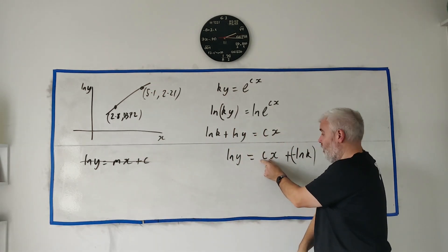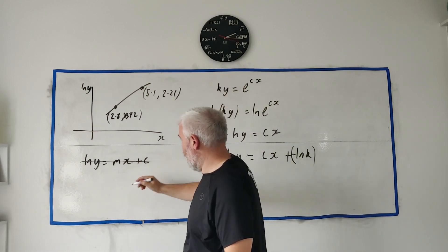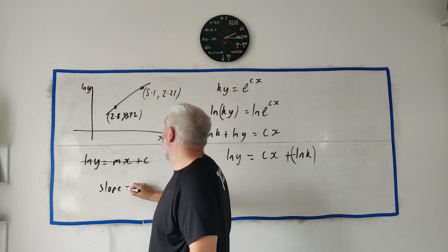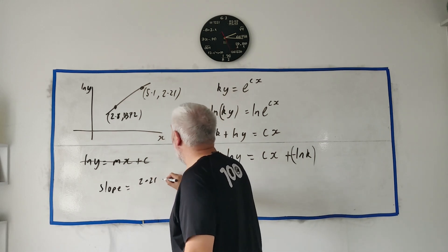So the slope—it's not too complicated. Let me write this: instead of m I'll write slope. The slope equals 2.21 minus 0.372 divided by 5.1 minus 2.8.